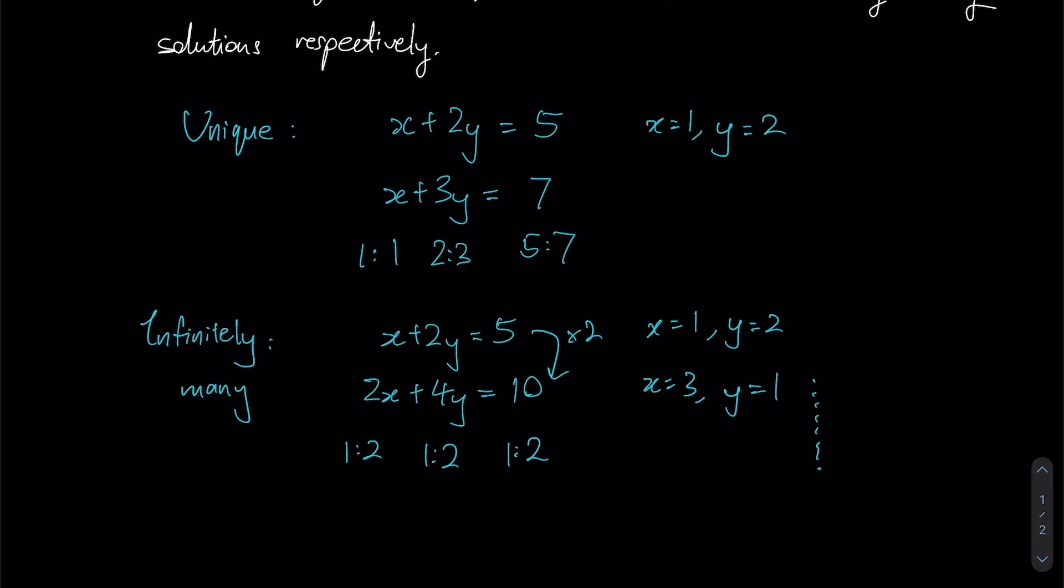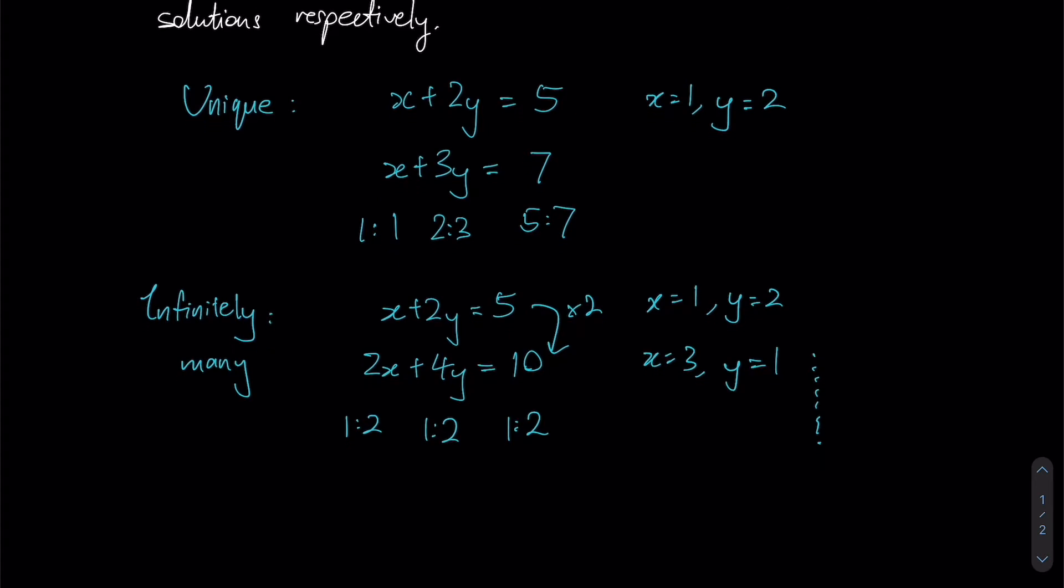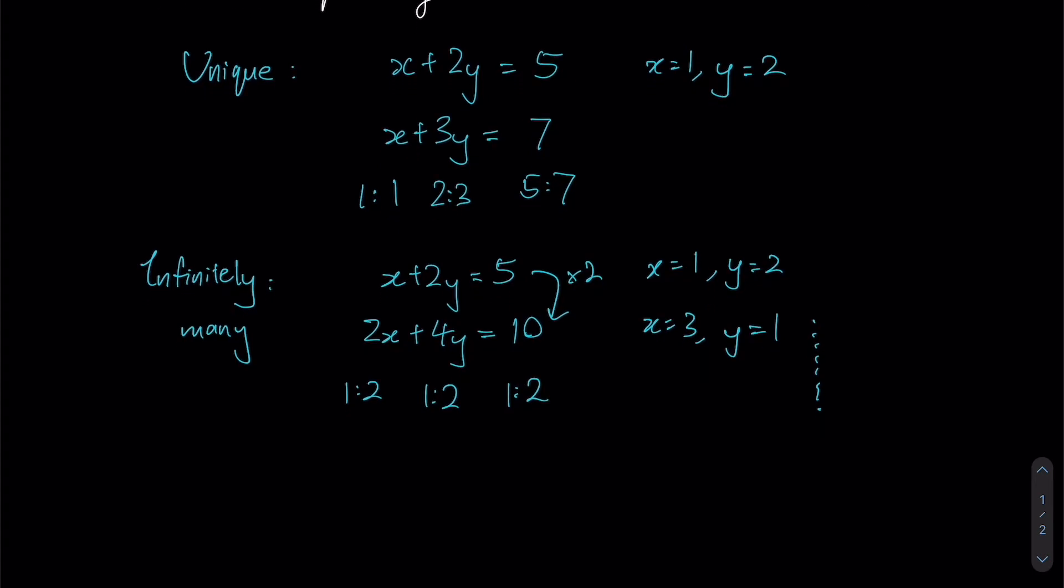Understanding that since all our ratios are in fact the same, the second equation is literally double of the first equation. Therefore, even though we're presented with two equations we are not necessarily getting more information; in fact we're getting back the same equation. Therefore we have infinitely many solutions for such a case.